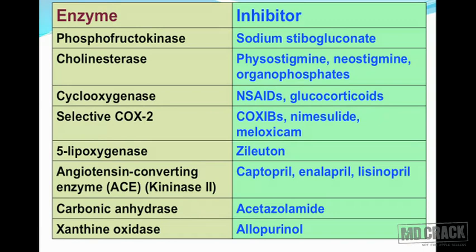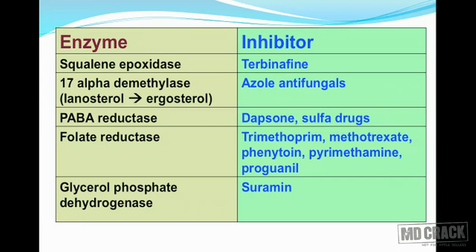Phosphofructokinase is inhibited by sodium stibogluconate. Cholinesterase enzyme is inhibited by anticholinesterase agents — physostigmine, neostigmine, and organophosphorus compounds. Cyclooxygenase is inhibited by NSAIDs and glucocorticoids. Selective COX-2 inhibitors include various coxibs as well as nimesulide and meloxicam. Zileuton, a drug used in bronchial asthma, inhibits 5-lipoxygenase, decreasing leukotriene synthesis. Captopril, enalapril, and lisinopril are ACE inhibitors, the same enzyme as kininase-2. Acetazolamide inhibits carbonic anhydrase. Allopurinol, useful in gout, inhibits xanthine oxidase and thereby inhibits uric acid synthesis.